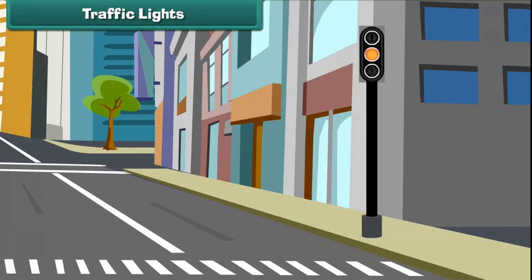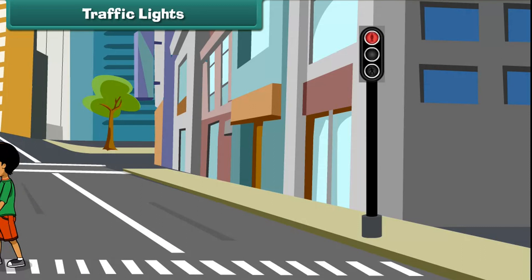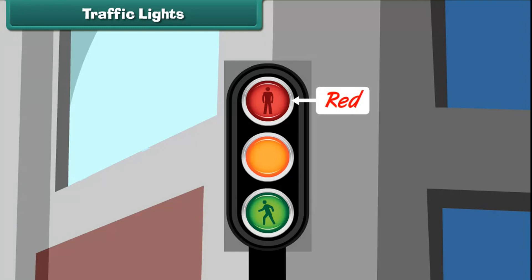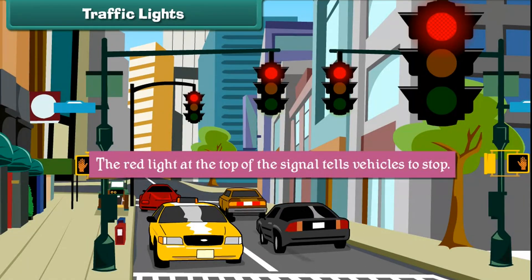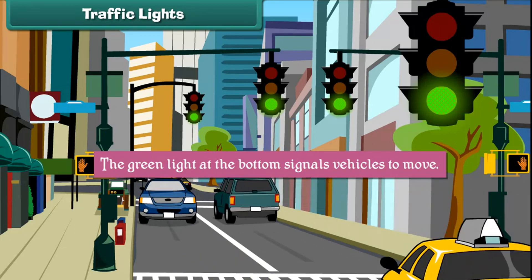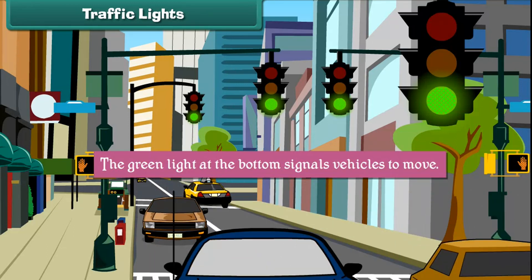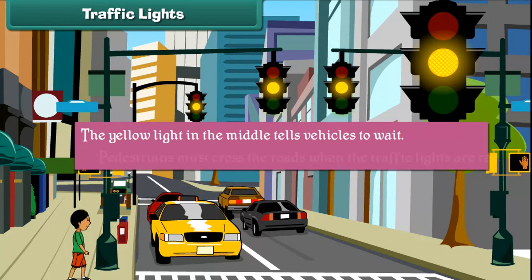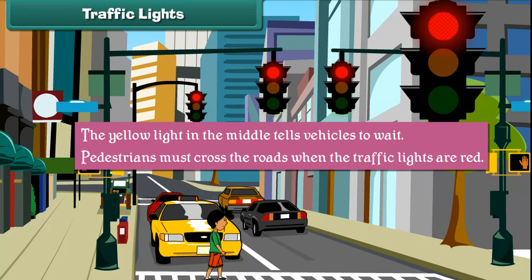Traffic lights. Traffic signals guide us on roads. We should always follow them when we are crossing or driving on roads. There are three lights on a traffic signal: red, green, and yellow. The red light at the top tells vehicles to stop — we must cross roads when vehicles stop for the red light. The green light at the bottom tells vehicles to go — we must never cross the road when lights are green. The yellow light in the middle warns vehicles that the traffic lights are about to turn red and tells them to slow down.